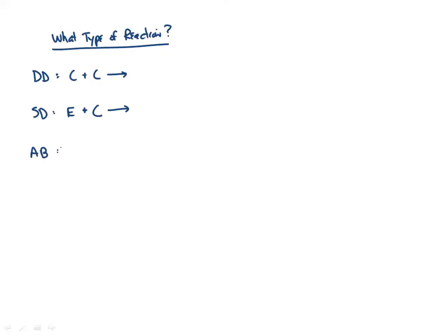Single displacement uses the activity series — which element is more reactive determines whether the reaction occurs. The activity series is just about reactivity. There is a small correspondence between electronegativity and reactivity, but the activity series is what we use. If the free element is more reactive, it switches places in the compound.